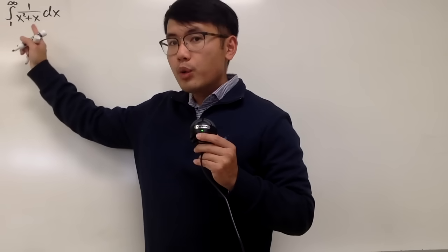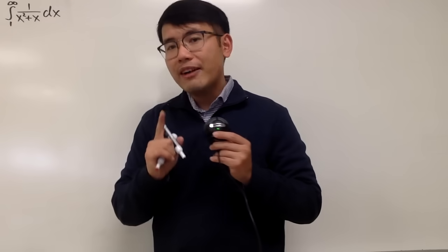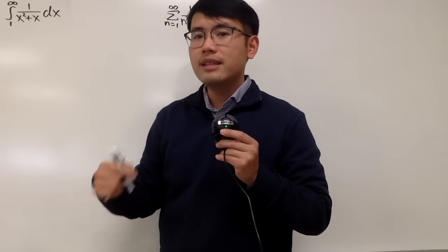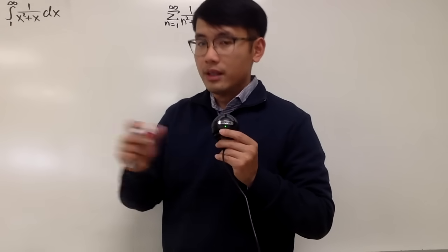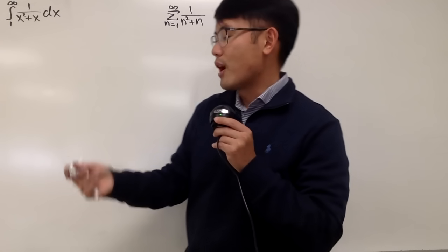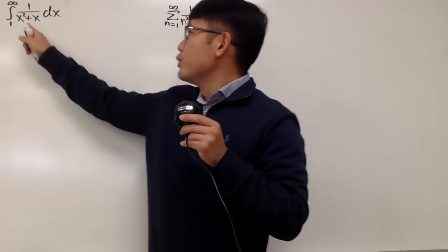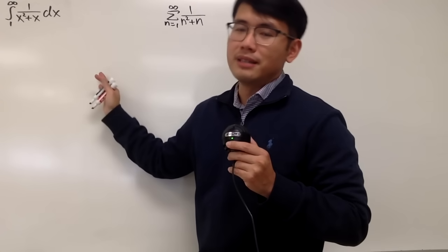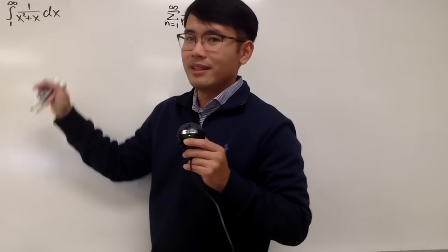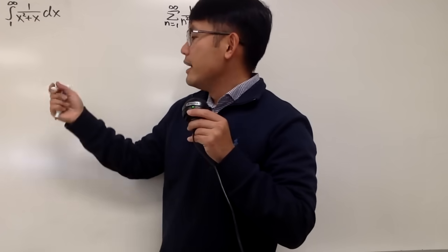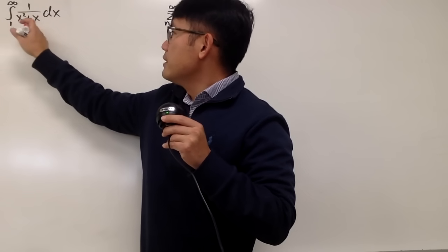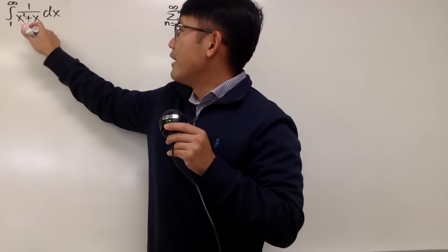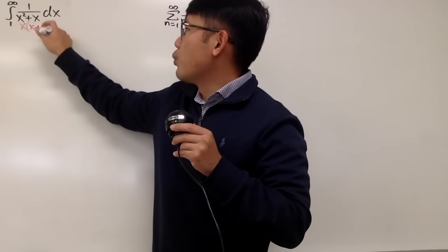First of all, to integrate this, we have to make sure we do partial fractions, and then we integrate these two little fractions. Do not just put down natural log of x squared plus x, because this is a quadratic. We can factor this as x times x plus 1.